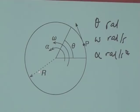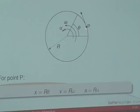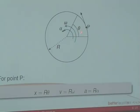We've got our disk with a radius r, and we can relate θ, ω, and α with the tangential velocity. For point P specifically: the tangential displacement X equals the radius multiplied by the rotational displacement (x = rθ); the tangential velocity equals the radius multiplied by the rotational velocity (v = rω); and the tangential acceleration equals the angular acceleration multiplied by the radius (a = αr).